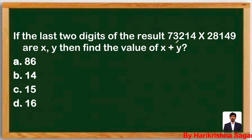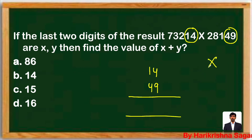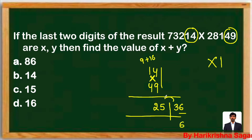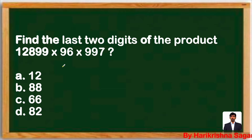Next question: if the last two digits of the result are x and y, find the value of x+y. Focus on the last two digits of the base, which are 14 and 49. I = 9×4 = 36. X = 9×1 + 4×4 = 9+16 = 25. Last digit of I is 6, carry 3. 25+3 = 28, second last digit is 8. So last two digits are 86, and x+y = 8+6 = 14.